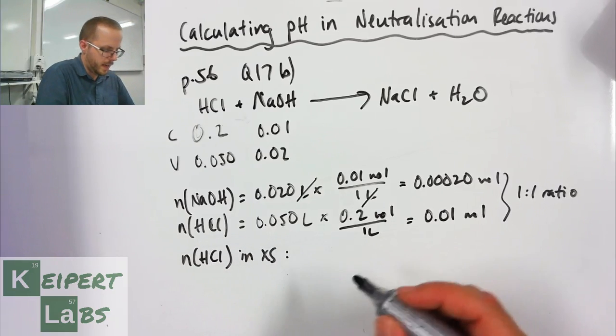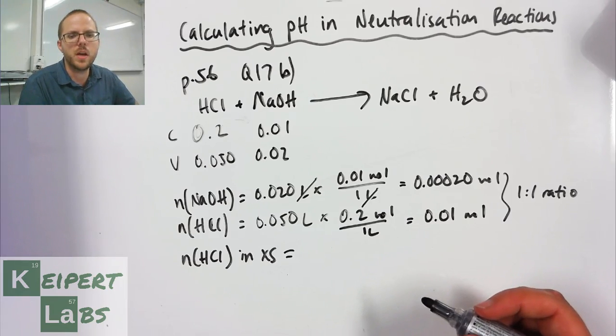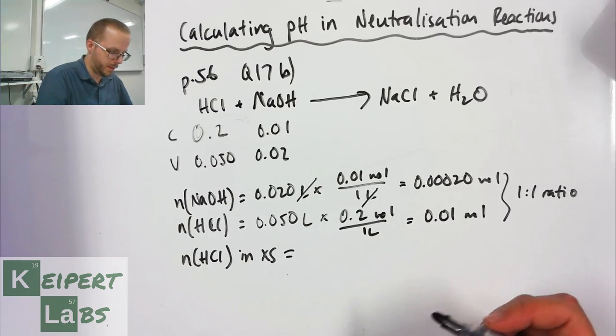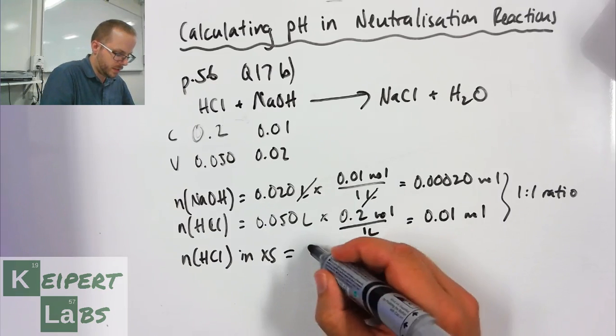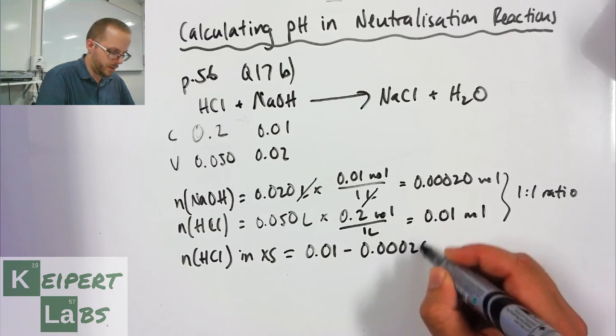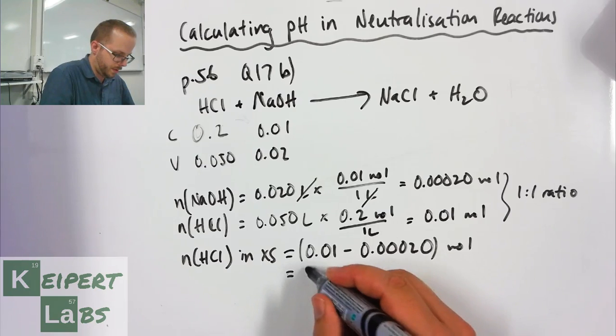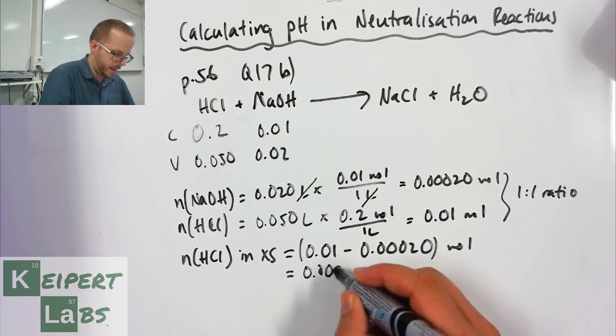So we want to work out how many moles of acid we've got in excess because that's what's going to cause the pH of the solution that we end up with. We take the number of moles of our base away from our original amount of acid and so we get 0.0098 moles.